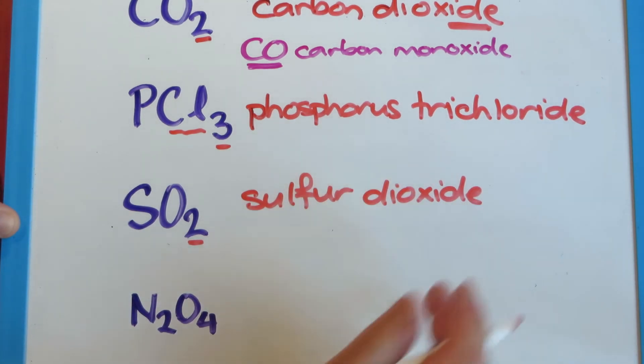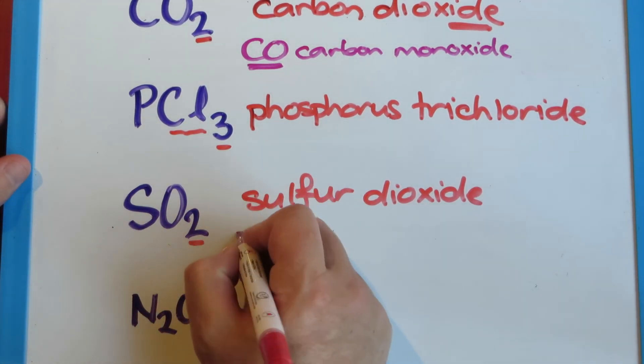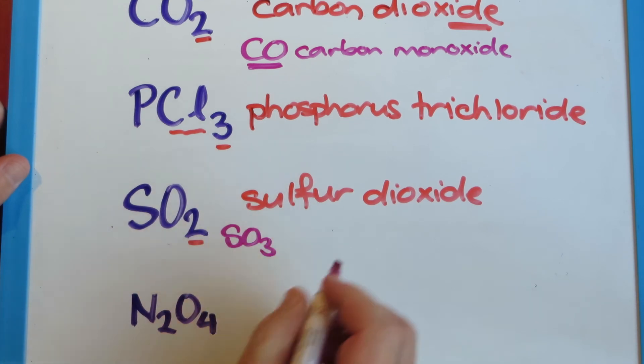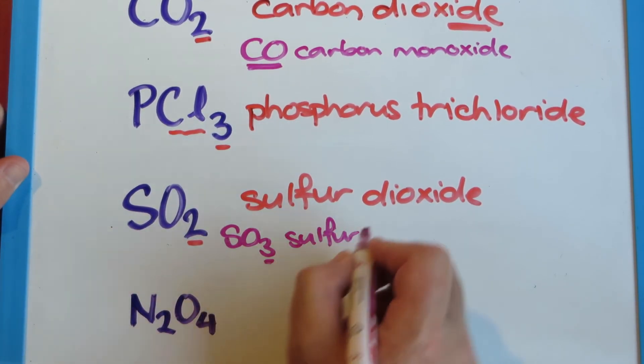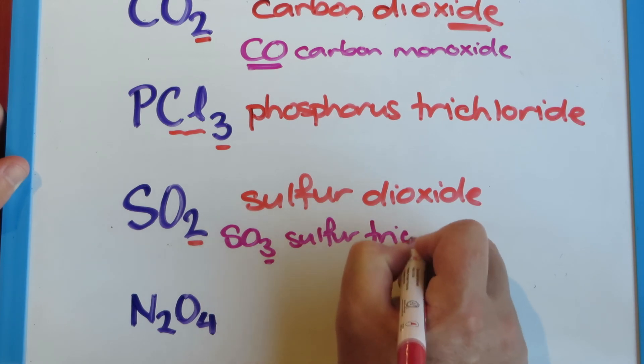So the ide is our suffix for the second element. And again, I'll show you a slightly different one. It's also pretty nasty stuff. These are both nasty chemicals. And this one would be sulfur with three oxygens, would be trioxide.